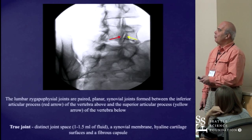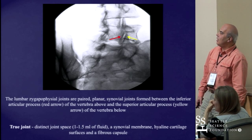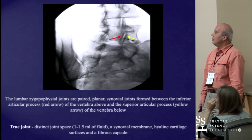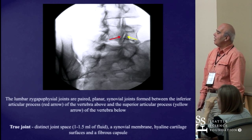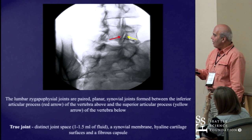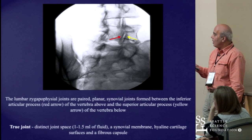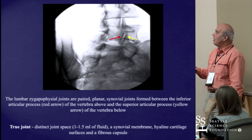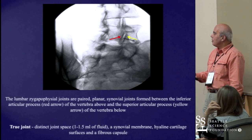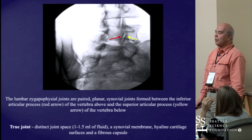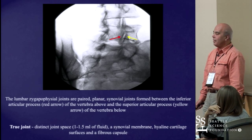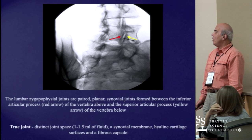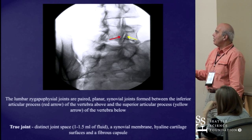Lumbar facet joint anatomy. The facet joints are true joints — they are paired planar synovial joints formed between the superior articular process of the vertebra below and the inferior articular process of the vertebra above. They may contain up to a maximum of 1.5 milliliters of fluid, and they have a true synovial membrane, cartilage surfaces, and a fibrous capsule.